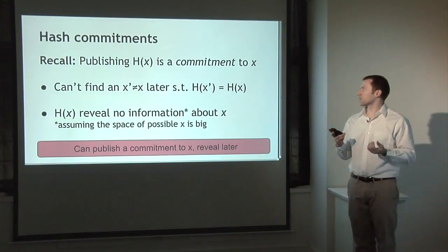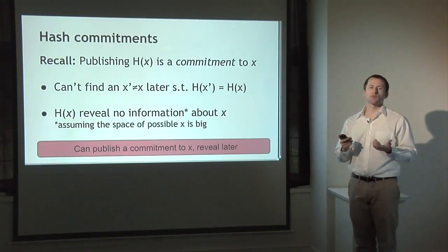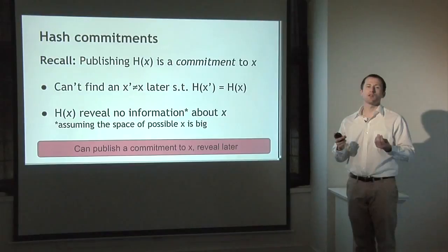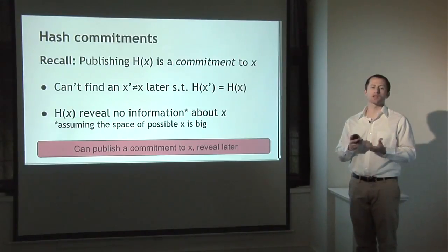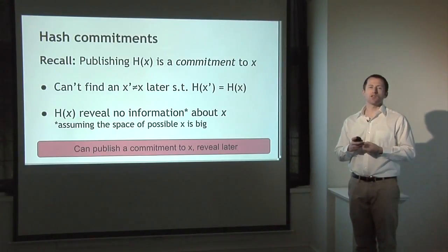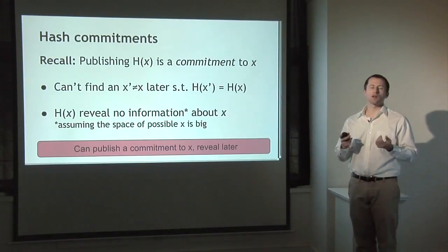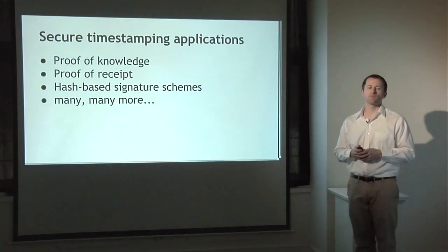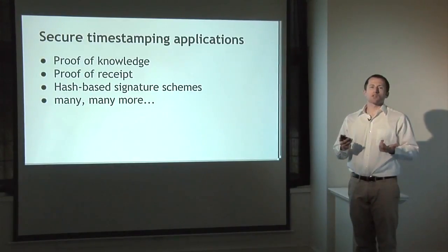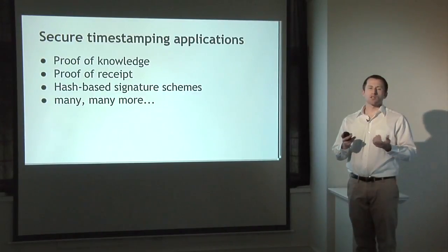The hash of x shouldn't reveal any information about x — with the caveat that this is only true if x comes from a large possible space. Otherwise, somebody who has the hash can try different values for x to see if any match. The idea of secure timestamping with an append-only log is that we publish a commitment — the hash of x — and later reveal what x was. Anybody can see that we must have known x at the time we published the hash, since there's no other way to generate that data.